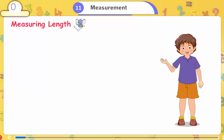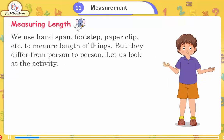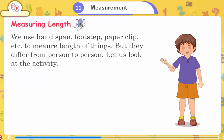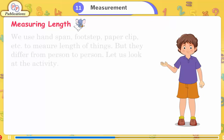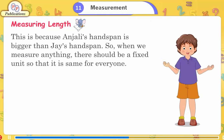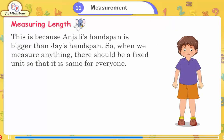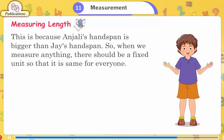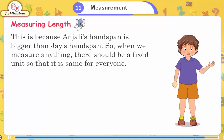Measuring length: we use hand span, footstep, paper clip, etc. to measure the length of things, but they differ from person to person. This is because Anjali's hand span is bigger than Jay's hand span. So when we measure anything, there should be a fixed unit so that it is the same for everyone.